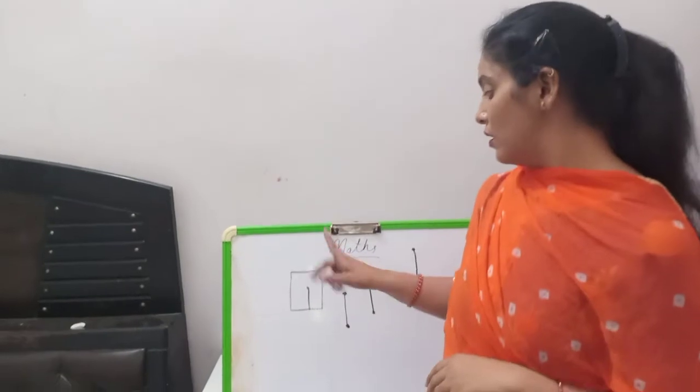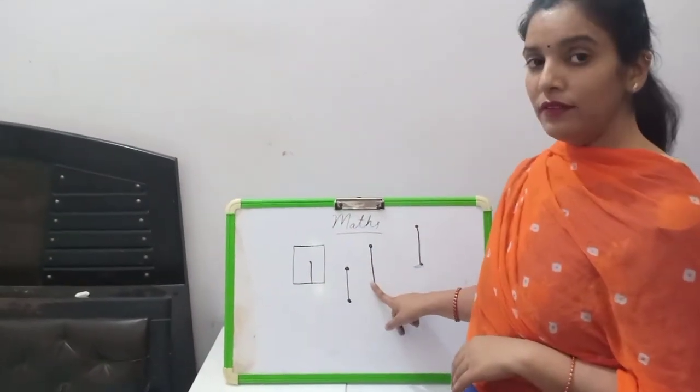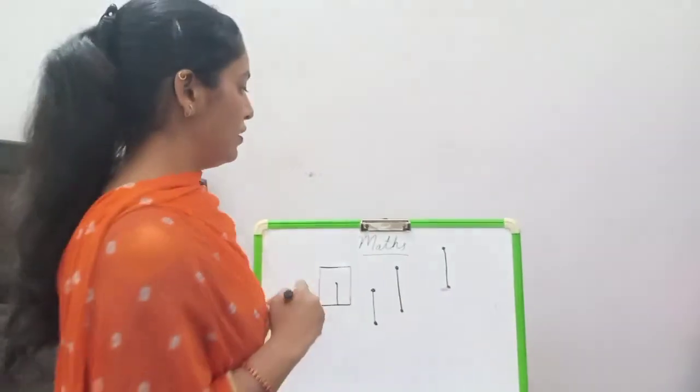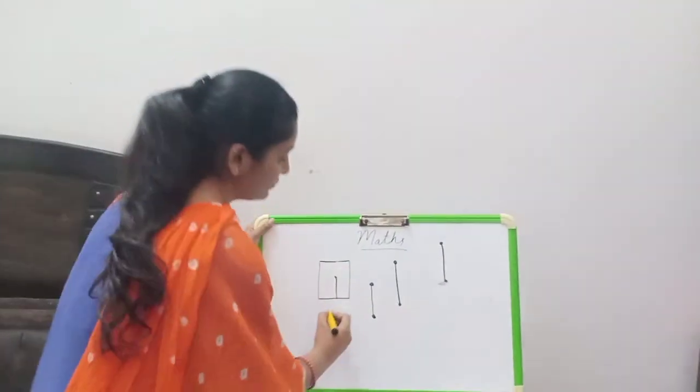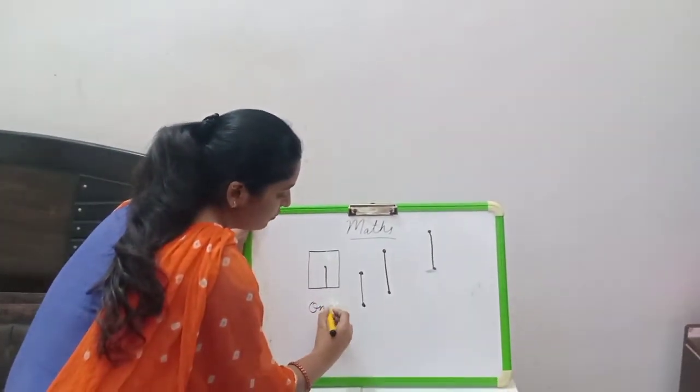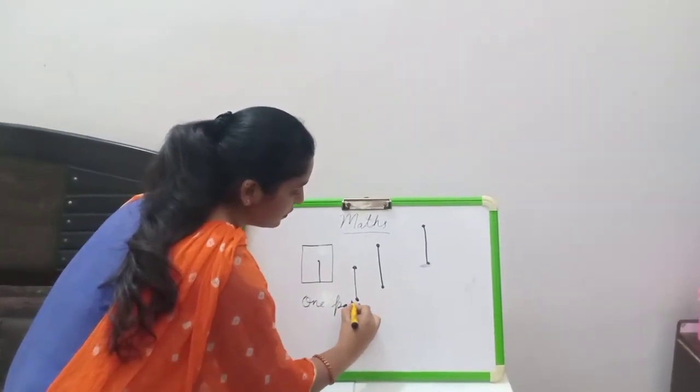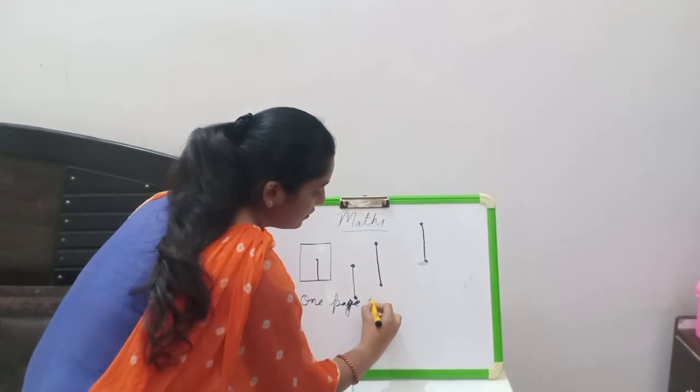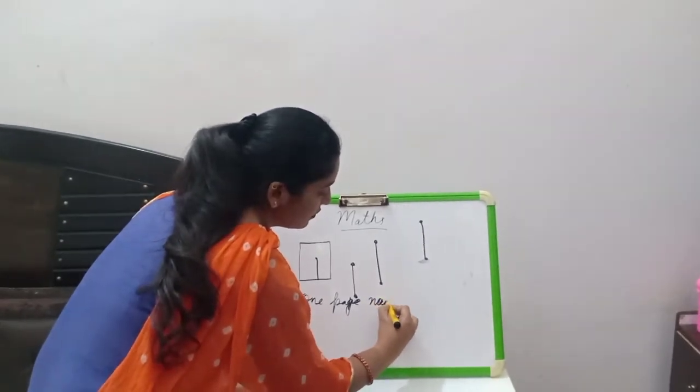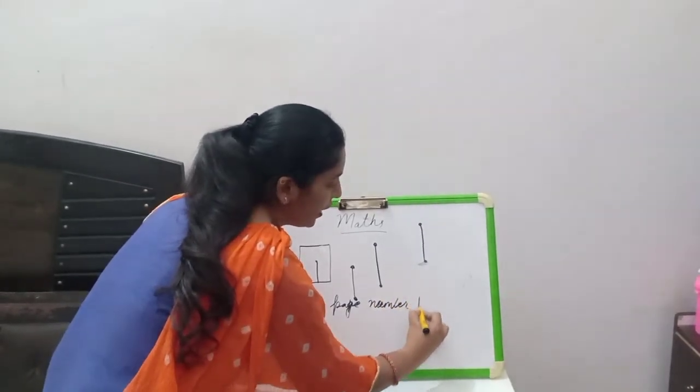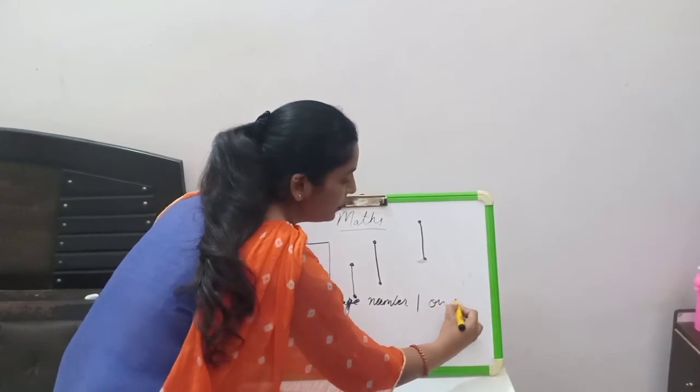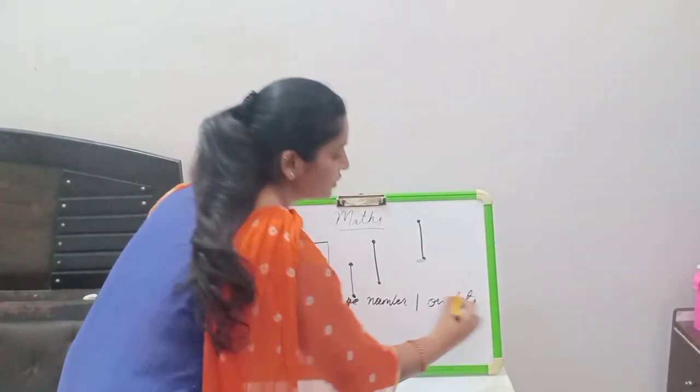So, this is your homework. You have to write one on dots. One page. You have to write one page. Number one on dots. One page. Number one. On. Dots. This is your homework.